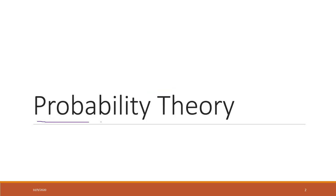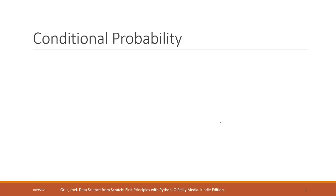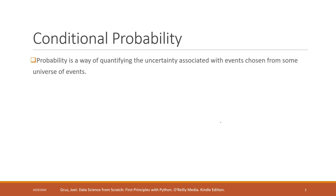This week we will introduce some basic ideas and concepts of probability theory that are very important in machine learning, and that form the foundation of the model we will discuss this week. Probability is a way that we can quantify the uncertainty associated with events that come from some universe of events. We denote the probability of one event happening as P.